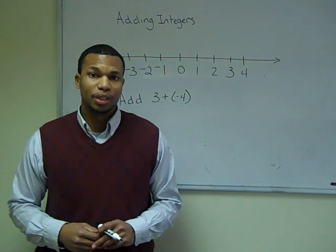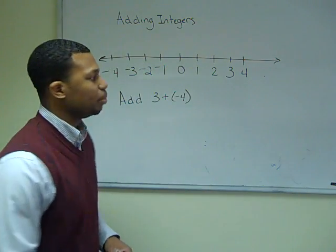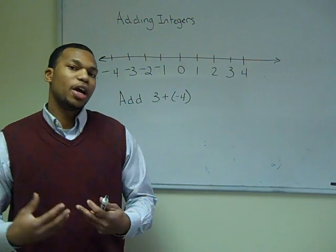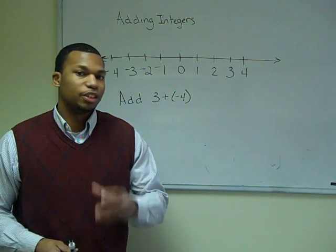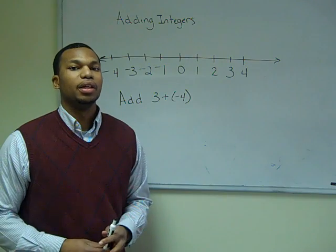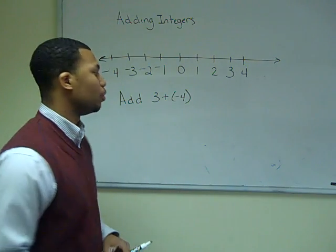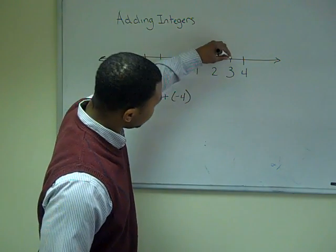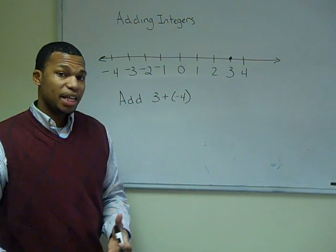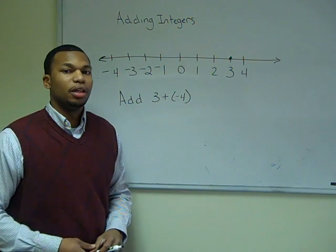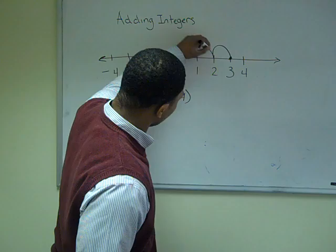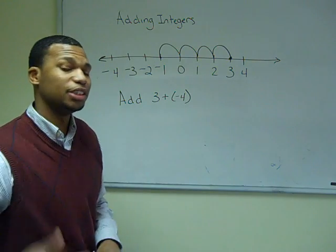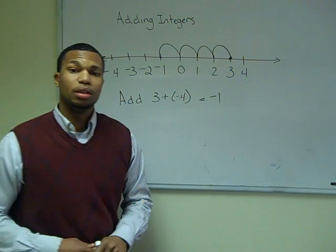If you can recall from the last lesson on placing numbers on the number line, we know that positive numbers are written to the right of zero and negative numbers are written to the left of zero. So if we are adding integers, we have a starting position and we move either left or right depending on the second number. For example, if we have positive three and we are adding negative four, our starting position is on positive three. Since we are adding negative four, we move to the left four times. Since our final destination is negative one, our answer is negative one.